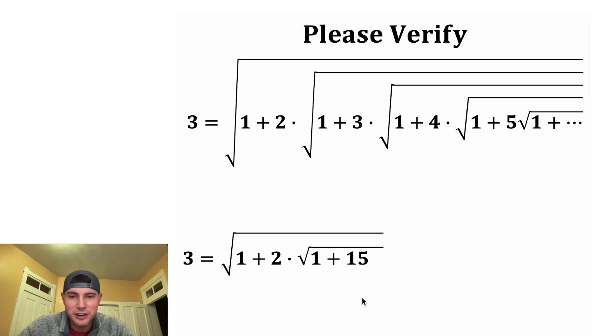And then we need a 3 here. So let's factor out a 3 and that gives us 3 times 5. And next we want a square root. So this 5 is going to change into square root of 25. So we're succeeding at building out this pattern. We have the 1 plus 2 times square root of 1 plus 3 times square root of.